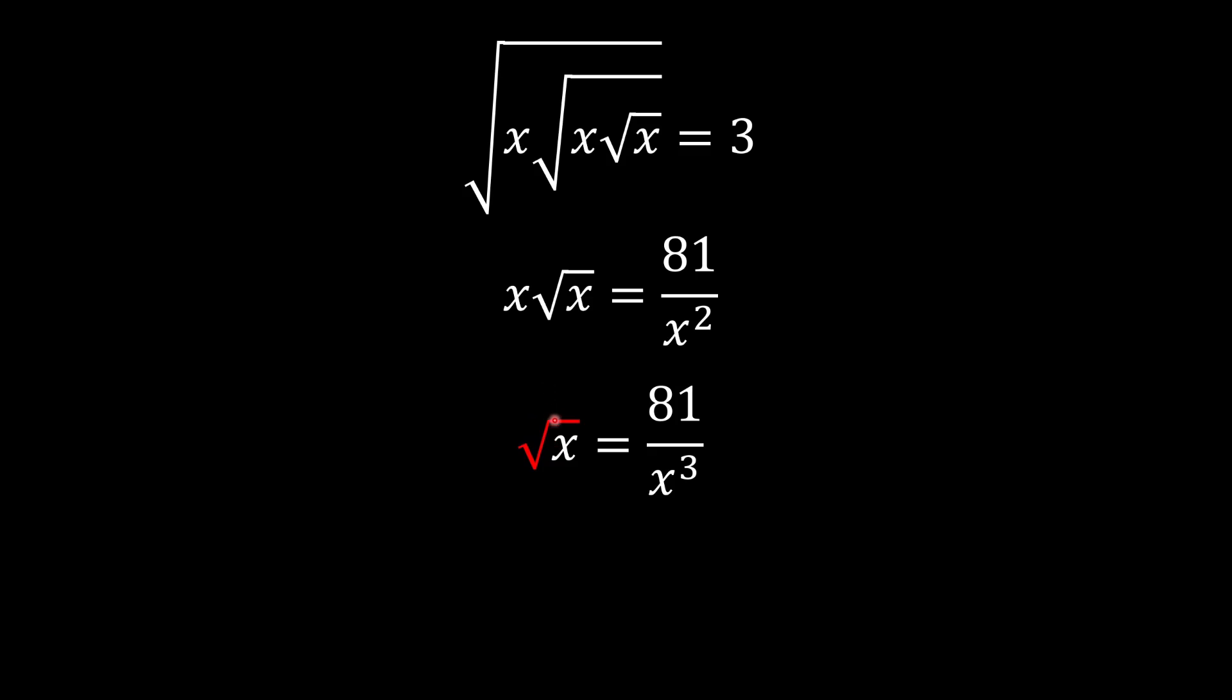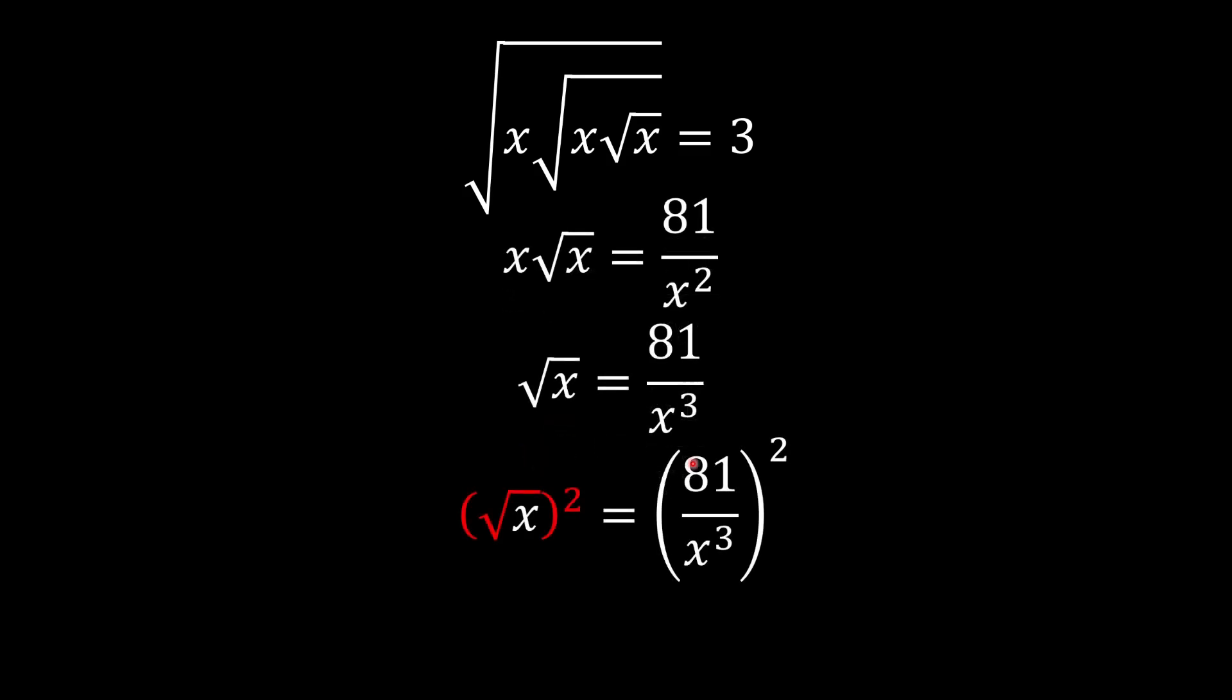Now, we have another square root. We do the exact same thing. We square it on both sides, and we square it on over here too. So now this cancels out over here. We do 81 to the power of 2, and now x to the power of 3, multiplied by 2. So we end up with this.